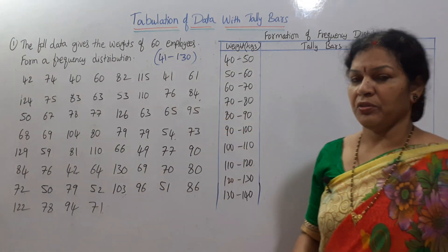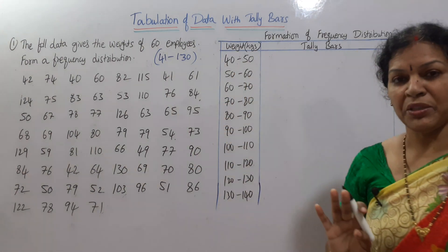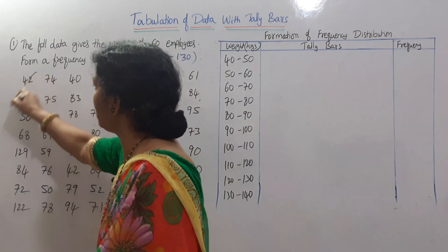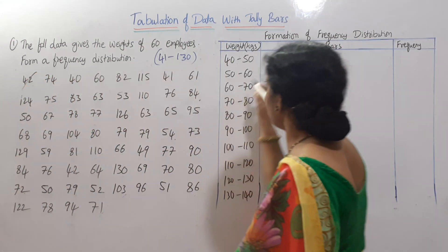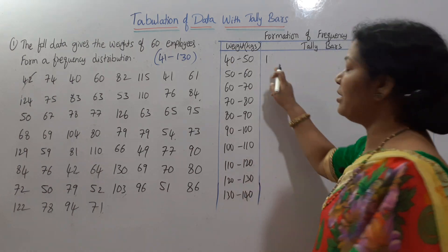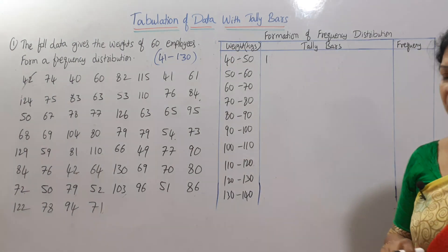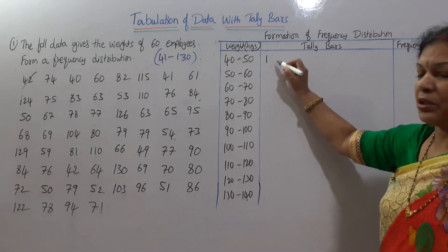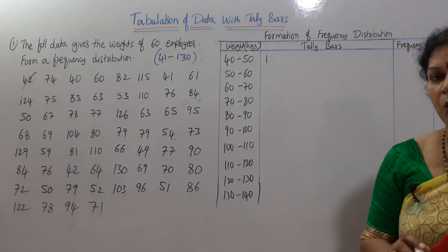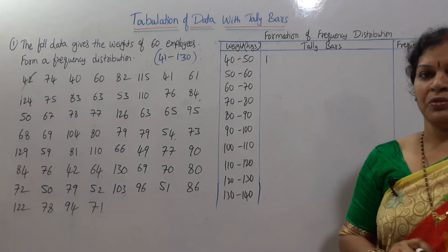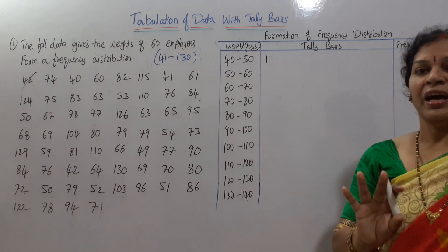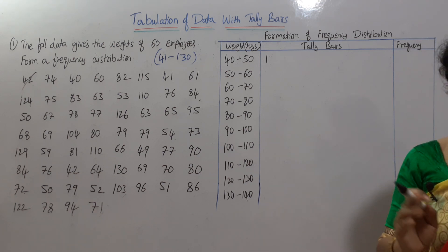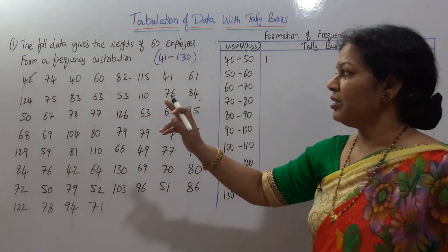Now, let's begin the tally process. The value 42 falls in the class interval 40 to 50. For each value, we mark a tally. When you have 4 tallies, the 5th one crosses them — so a group of 5 is marked with 4 lines and one cross.